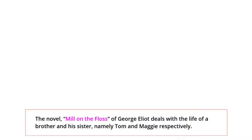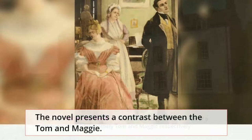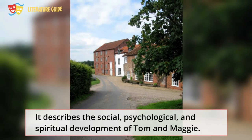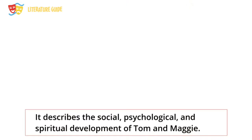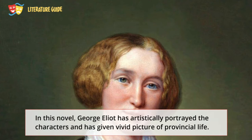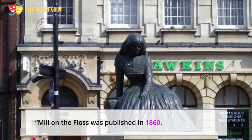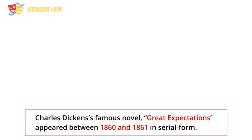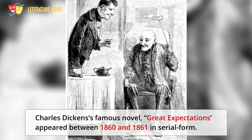The novel Mill on the Floss by George Eliot deals with the life of a brother and sister, namely Tom and Maggie respectively. The novel presents a contrast between Tom and Maggie and describes their social, psychological, and spiritual development. George Eliot has artistically portrayed the characters and given a vivid picture of provincial life. Mill on the Floss was published in 1860. Charles Dickens' famous novel Great Expectations appeared between 1860 and 1861 in serial form.